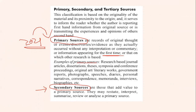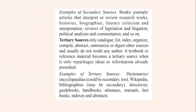Examples of primary sources include research-based journal articles, dissertations, theses used in conferences and symposiums, government reports, photographs, speeches, diaries, personal narratives, and correspondence. Secondary sources, as mentioned, are a value addition — they can be restated, interpreted, summarized, reviewed, or analyzed from a primary source. Examples of secondary sources include books, journals, articles that interpret or review research work already done, histories, biographies, and criticisms — when we use these, they become secondary data.